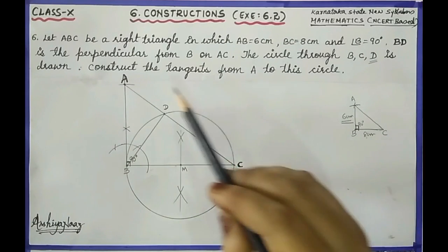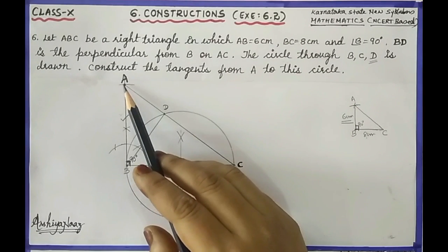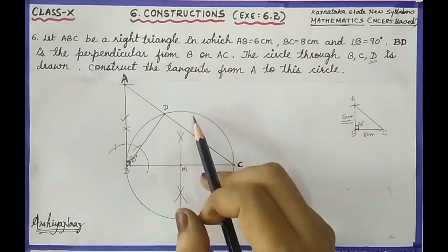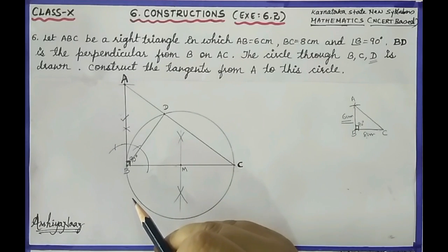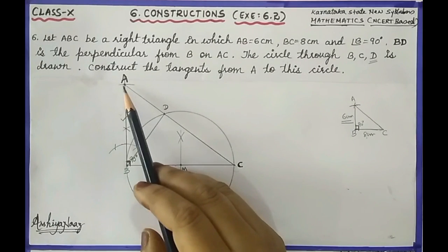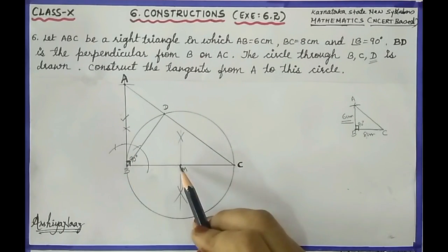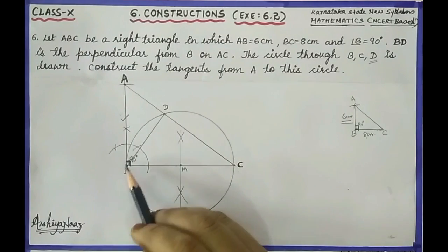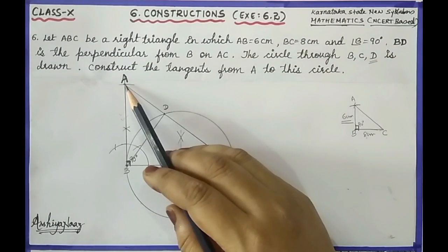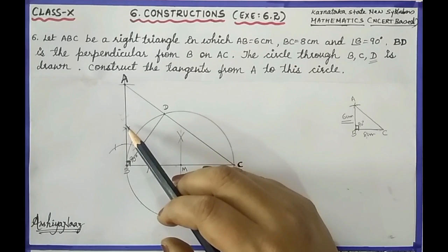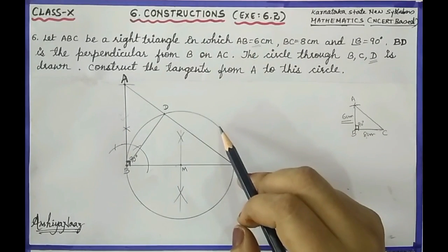Now let us move on to the next part — construct the tangents from A to this circle. From point A, we need to draw two tangents to this circle. You know that a tangent is always perpendicular to the radius of the circle. Here, line AB is perpendicular to radius BM, so AB will be one tangent to the circle. Also, tangents drawn from an external point to a circle are always equal, so the other tangent will also be equal to 6 cm.